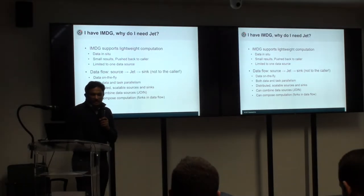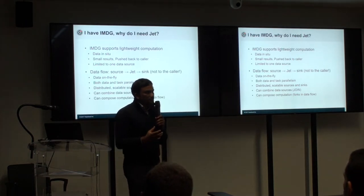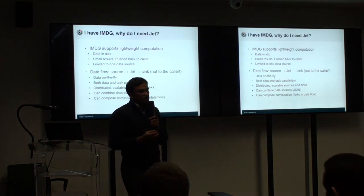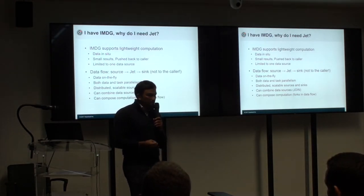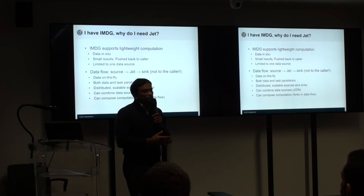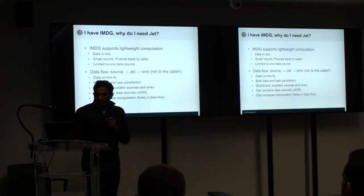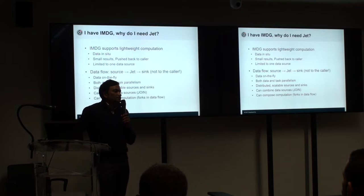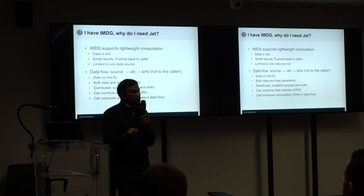That pretty much answers why you need Jet: it allows you to process data in motion in a way that is easily scalable. The framework provides the ability to easily scale without writing all of that low-level code. IMDG, on the other hand, is for holding data at rest and processing over it, whereas Jet is for processing data that is moving.